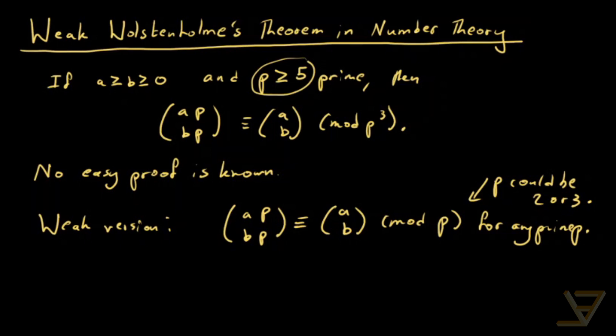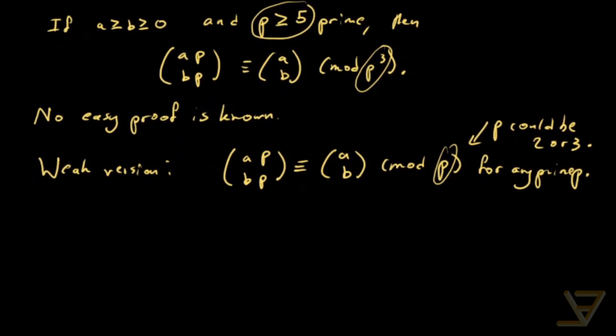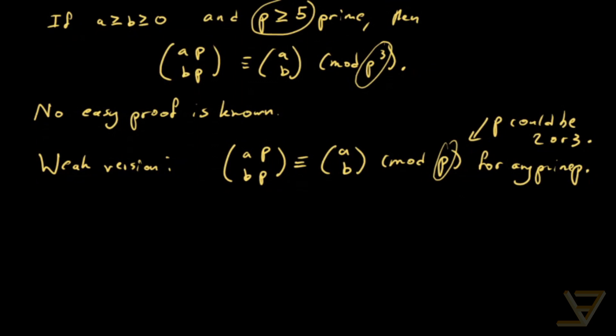But the mod p cubed is far stronger than the mod p, so we have to weigh which one is better. But in terms of a proof that fits into a short video, the weak version is the better one to go with. So let's prove it.